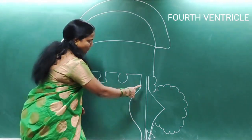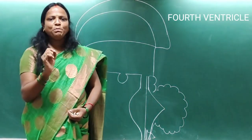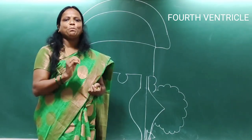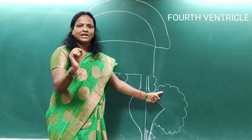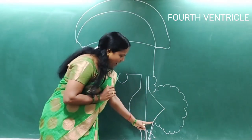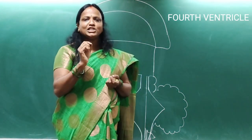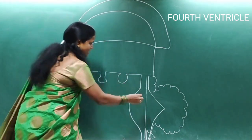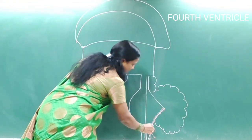The upper part of the roof or dorsal wall is formed by the superior medullary velum, which connects the two superior cerebellar peduncles. The superior cerebellar peduncles connect the cerebellar hemispheres with the midbrain. The lower part of the roof presents a conjoint membrane of tela choroidea and pia mater, which invariably presents the choroid plexus.